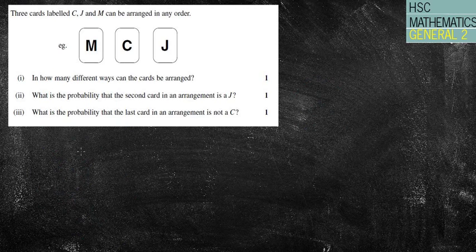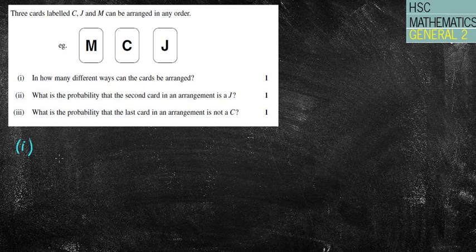Three cards are labelled C, J, and M. They can be arranged in any order. In how many different ways can these cards be arranged? Well, I'm choosing three cards. So again, I like to use the place method. There are three cards to choose from to begin with, so I've got three options. But now I've chosen a card, therefore there must only be two options left. And now that I've chosen two cards, there can only be one option left, which means I have six altogether.